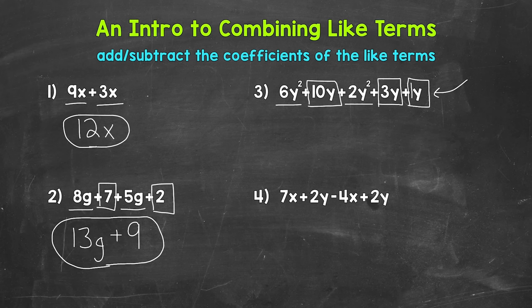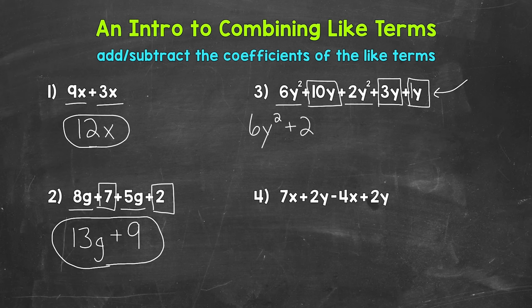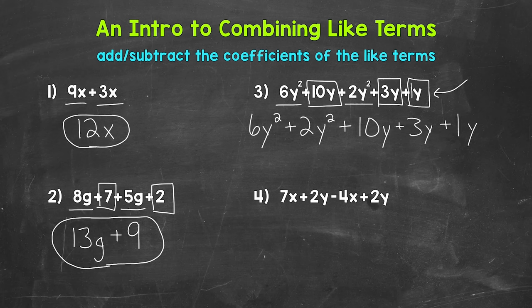Since this algebraic expression has five terms, and we are working our way up to more complicated algebraic expressions, we're going to use a strategy to help us organize the expression before we combine like terms. We are going to rearrange and rewrite the expression and put the like terms next to each other. I'll start with 6y squared plus 2y squared, then the y terms: 10y plus 3y plus 1y. So now all of the like terms are next to each other, and it's a little easier to see what we can combine. You don't have to do this step, but it can be helpful.